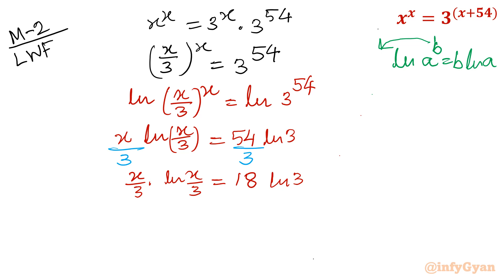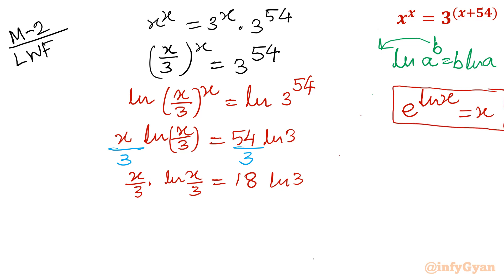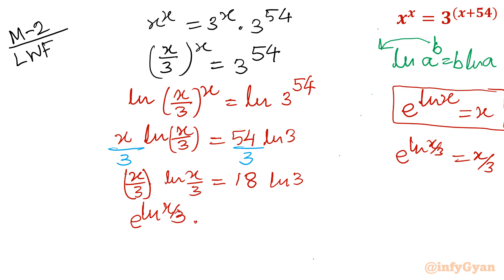Now using the exponent property e^(ln u) = u, I rewrite x/3 as e^(ln(x/3)). So the left-hand side becomes e^(ln(x/3)) · ln(x/3) = 18·ln3. I then apply the Lambert W function to both sides.